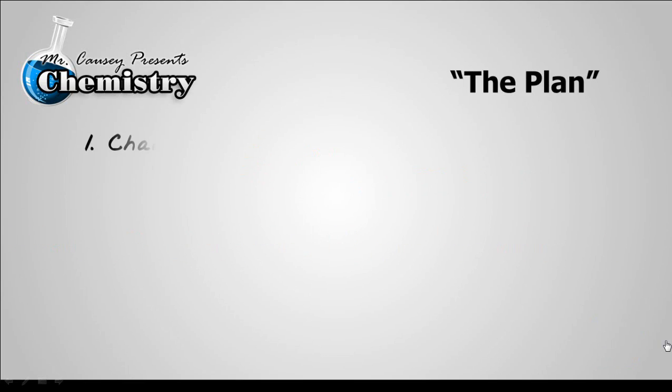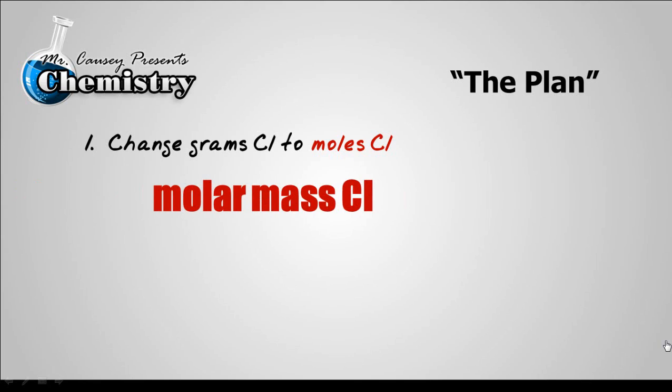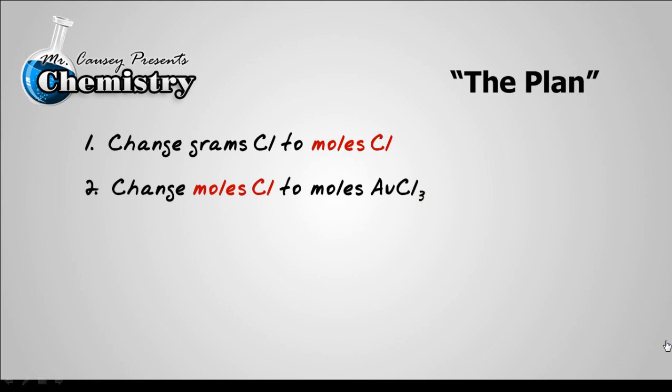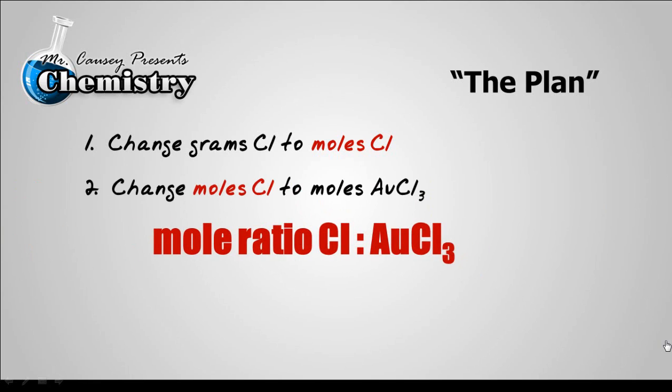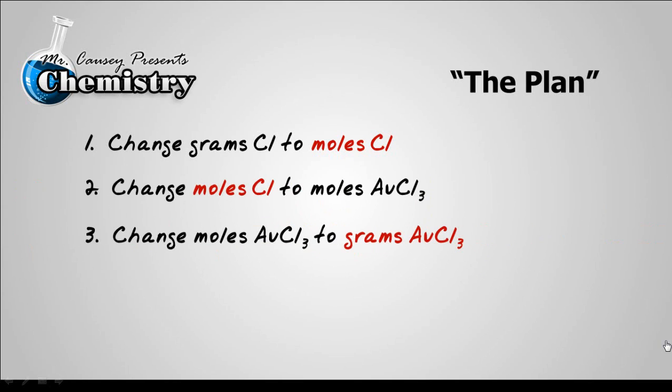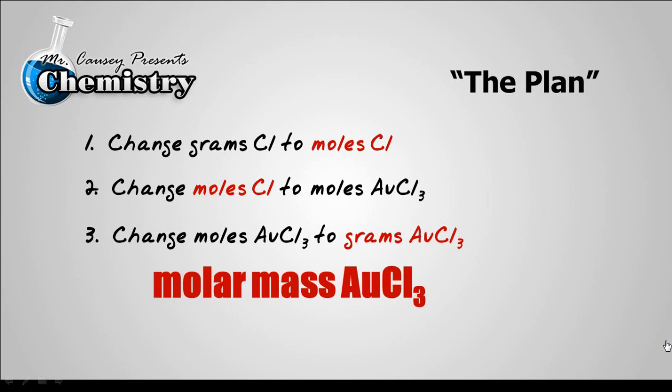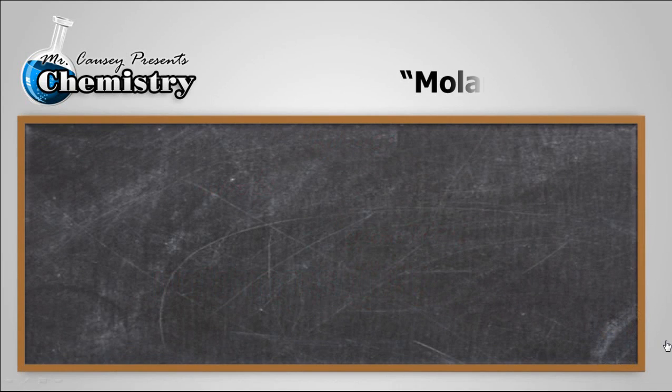Here's the plan. One, change grams of chlorine to moles of chlorine, using molar mass of chlorine. Then, two, change moles of chlorine to moles of gold 3-chloride, using the mole ratio between the two. Then, three, change moles of gold 3-chloride to grams of gold 3-chloride, using the molar mass of gold 3-chloride. With that plan, let's start.